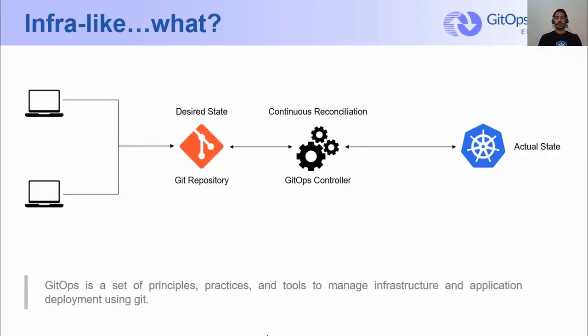Lately, there have been lots of talk about deploying applications following the GitOps operating model. However, there are often gaps in doing so when it comes to infrastructure where those applications run on top of. Until recently, infrastructure provisioning and its lifecycle management were handled in a different way than application deployment, and likely not following all four principles of GitOps.